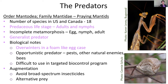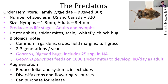The next group of predators are called big-eyed bugs — you can see this insect actually has really big eyes, which is how it got its common name. It's predaceous in both the adult and immature stage. Its hosts are insect pests like spider mites, scales, whiteflies, and chinch bugs. A common species is Geocoris, the big-eyed bug, which can eat 1,600 spider mites during development or about 80 insects per day as an adult.